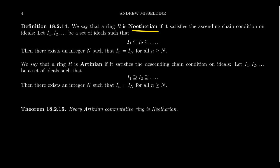We say that a ring is Noetherian if it satisfies the so-called ascending chain condition, often called ACC for short — the ascending chain condition on its ideals.